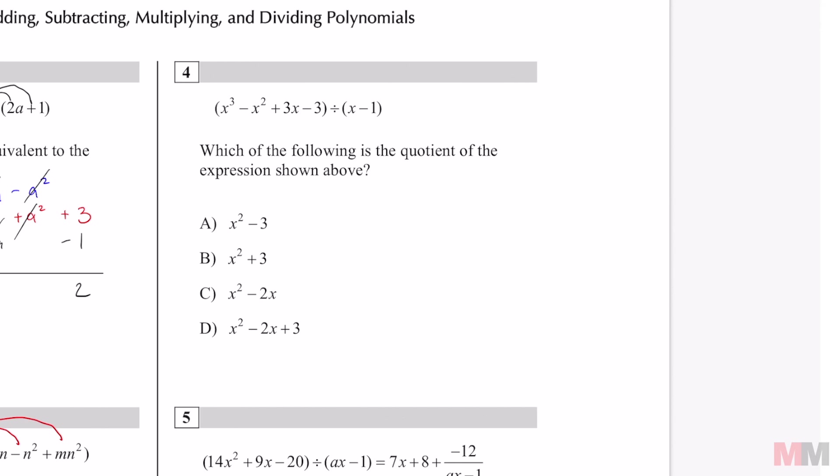First part of synthetic division you take this and you set it equal to 0 and you solve for x. So that's just plus 1 and I get x equals 1. That is the number that goes outside of your synthetic division box and then you just put the coefficients of these as long as they're in descending order which they are and I'm not missing any terms. So the number in the inside if these don't have numbers it's a 1 is 1 negative 1 3 and negative 3.